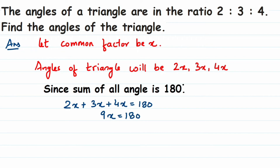From here, X is equal to — transposing 9 to the other side, it comes in division — so X = 180 ÷ 9. Cancelling, we get X = 20. Therefore, X is equal to 20°.